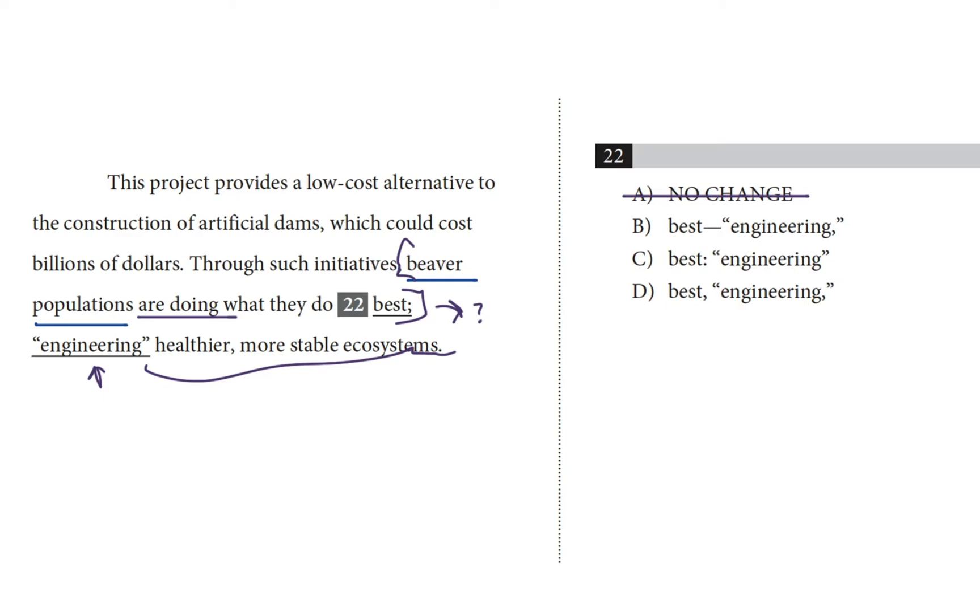There's that comma after engineering, which chops up this second part of the sentence in this weird, awkward way - engineering, healthier, more stable ecosystems. When really, healthier, more stable ecosystems is the object of engineering. It's what the engineering accomplishes. So that comma makes this weird and awkward and not our choice.